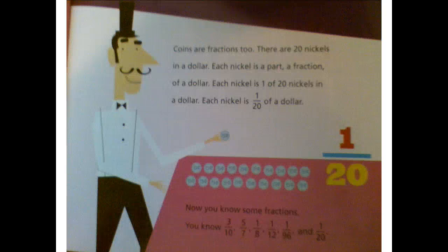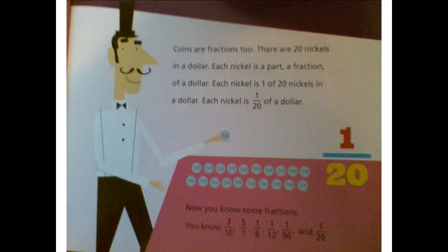Coins are fractions too. There are twenty nickels in a dollar. So twenty nickels are the same as one dollar. Each nickel is a part, a fraction of a dollar. Each nickel is one of twenty nickels in a dollar. Each nickel is one twentieth of a dollar.